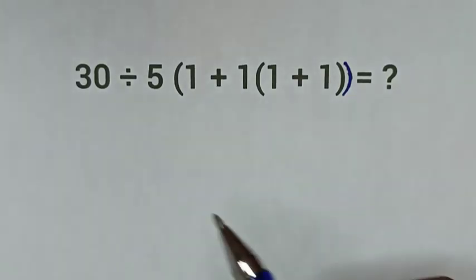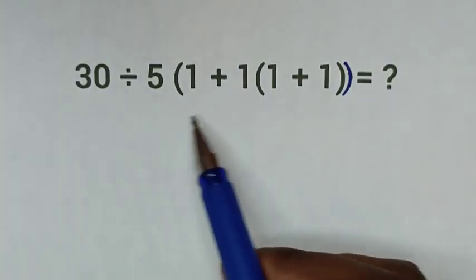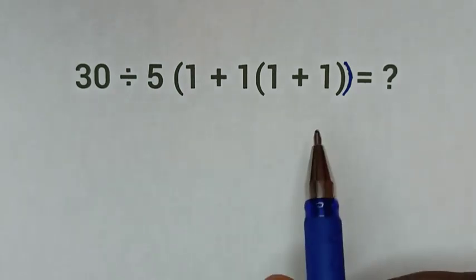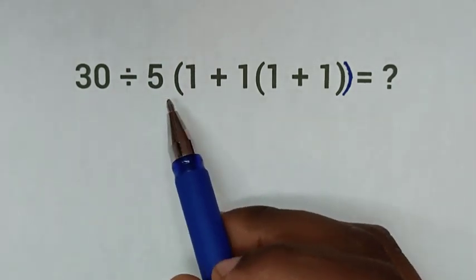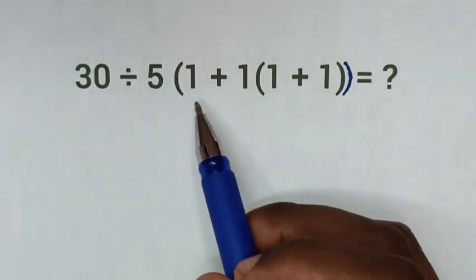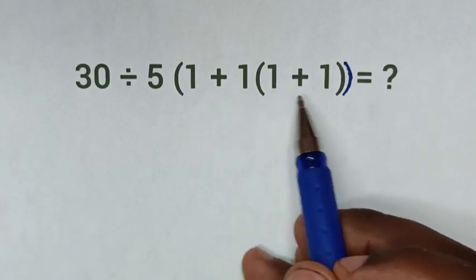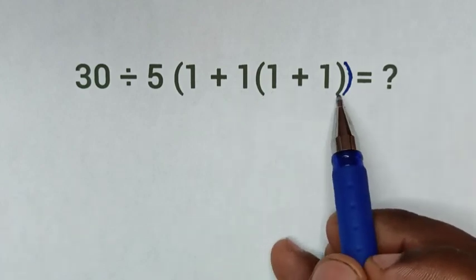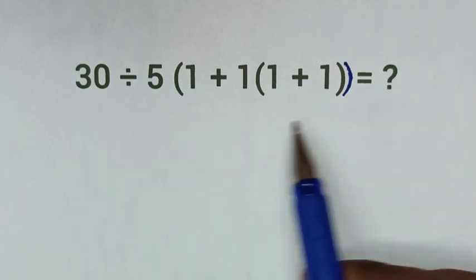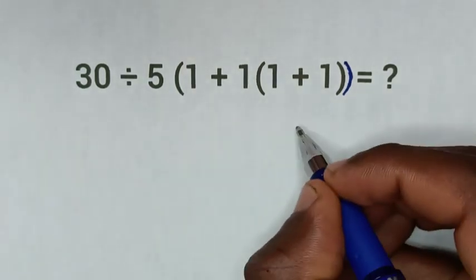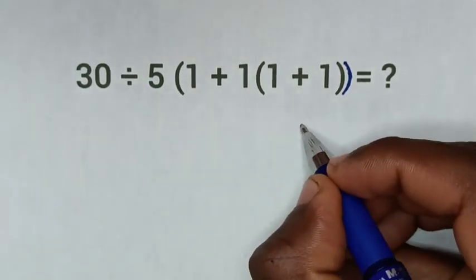Hello, you are welcome. In this video we'll solve the math problem 30 divided by 5, bracket 1 plus 1, bracket bracket. From this math problem we'll solve it by using the BODMAS rule.